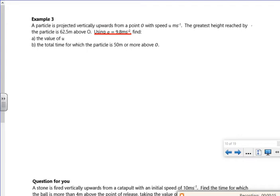So a particle is projected vertically upward from a point with speed u. The greatest height reached by the particle is 62 meters above where it's fired from. Right, so that thing there about the greatest height, I know that v is zero because when it gets there it's stopped. So I've got something which is projected upwards, so up is my positive, so gravity is negative.